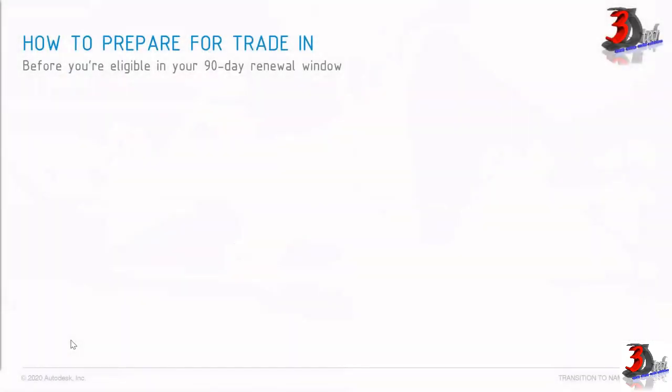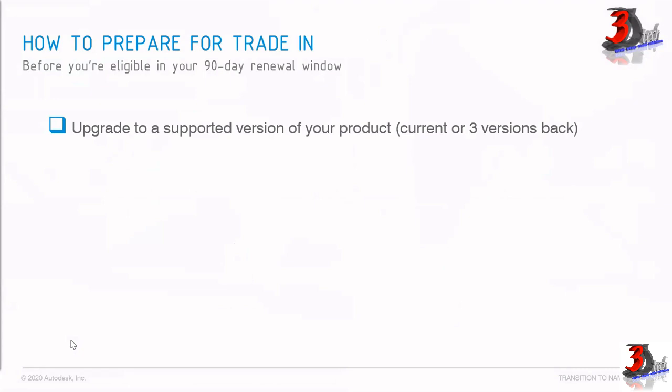So how can you prepare for this trade-in? First and foremost, if you are eligible in your 90-day renewal window, what you need to do is upgrade to a supported version of your product. Please take note that any active subscription or maintenance would allow you to download the current or three previous versions of your software.